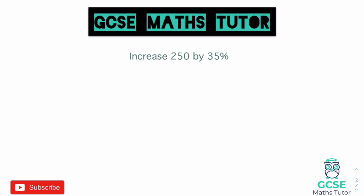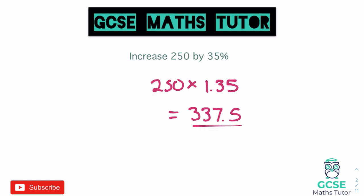This question says increase 250 by 35%. So if we're increasing by 35%, we're going to start with a one-point number, so that would just be 1.35, and that would increase by 35% for us. The one represents the 100%, the extra 0.35 represents the additional 35%. So into our calculators, we just need to type in 250 multiplied by 1.35, and that comes out as 337.5. And that right there is our final answer.